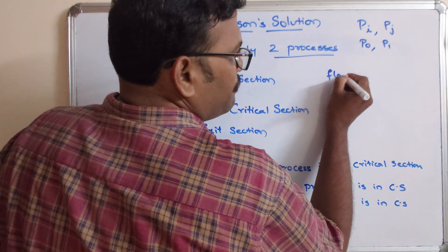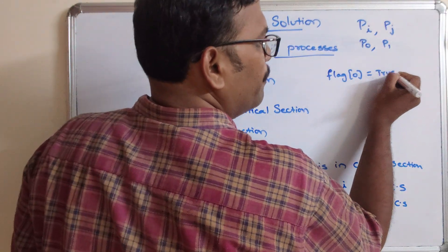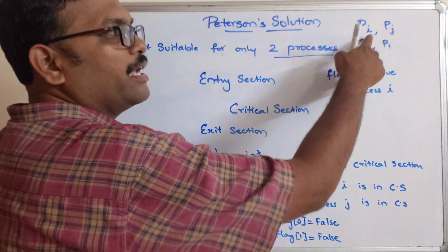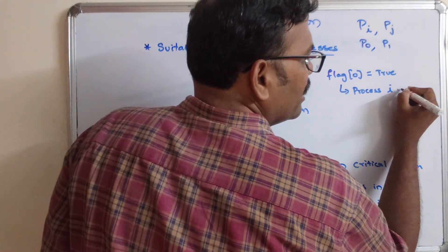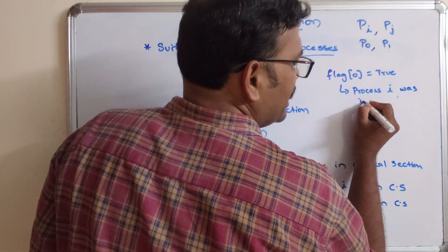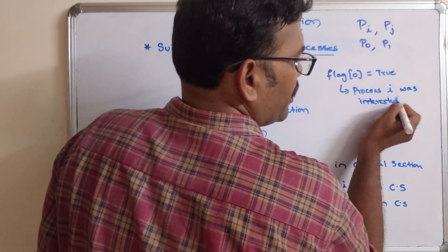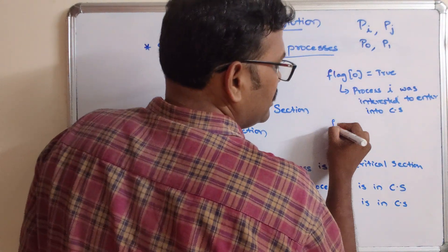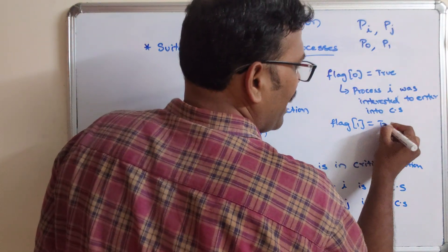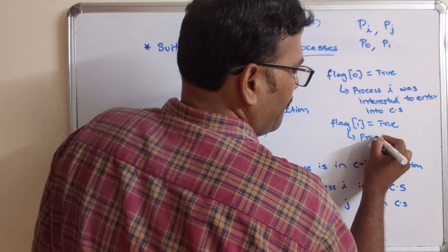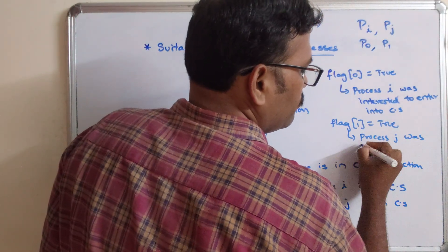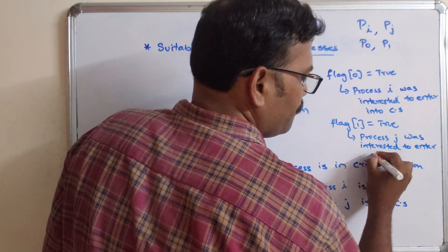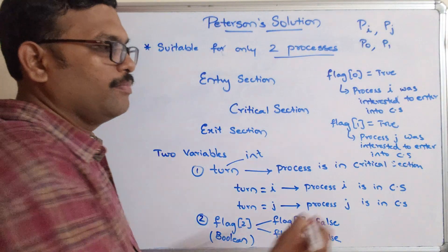So flag[0] equal to true means process I was interested to enter into the critical section — because I am indicating I as 0 and J as 1. Similarly, if flag[1] is true, then process J was interested to enter into the critical section.